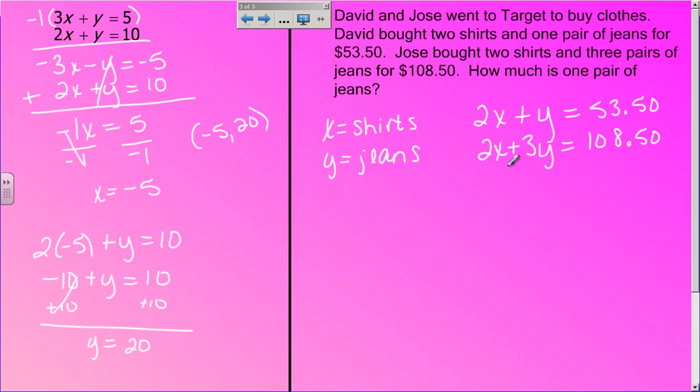Now we get to talk about elimination. Look at your x's. Same coefficient, a 2 and a 2, but I need them to be opposite. So again, I've got to multiply by that negative 1. Take your top equation times negative 1. So you end up with negative 2x minus y is negative 53.50. And the bottom equation stays the same.